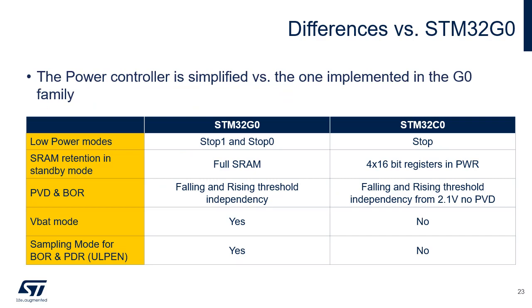The table in this slide compares the features of STM32C0 and STM32G0 in terms of power control. The STM32C0 supports a unique stop mode, while the STM32G0 supports two stop modes. The STM32C0 ensures retention of only the backup registers in standby mode, while the STM32G0 also ensures retention of the SRAM. VBAT mode is not supported by STM32C0. Sampling mode for BOR and PDR is not supported by STM32C0. In stop 0, stop 1, and standby mode, BOR and PDR can be periodically activated in STM32G0 to decrease power consumption.